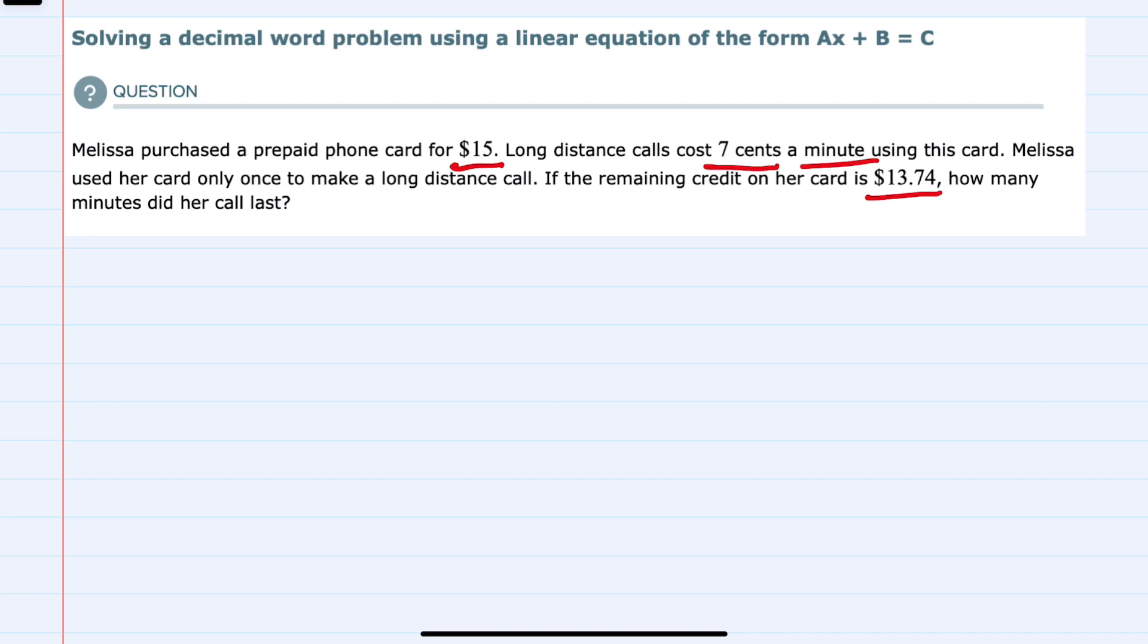So we know that the total amount on Melissa's card is $15. That will be the right hand side, c equals $15, and I'm going to write this with the cents.